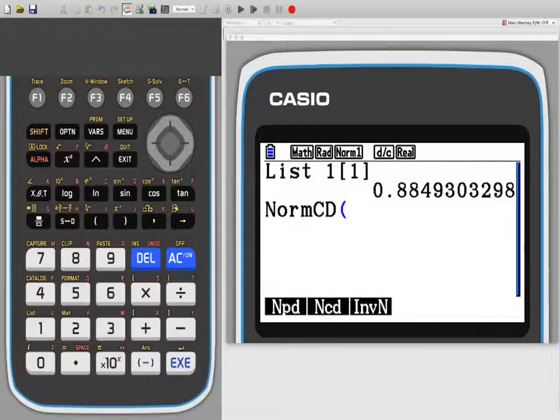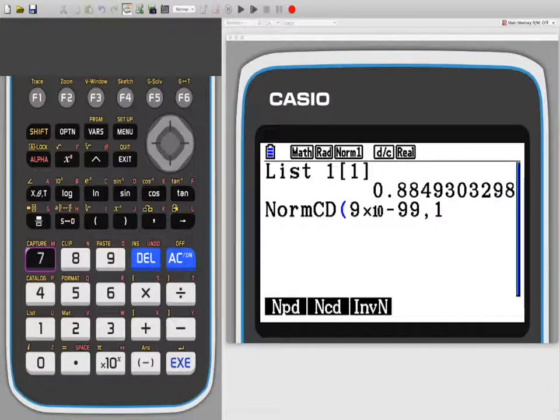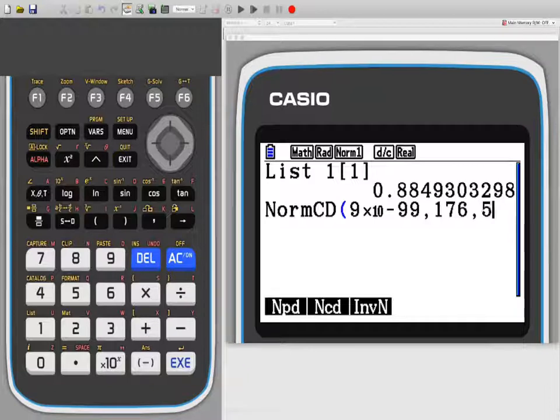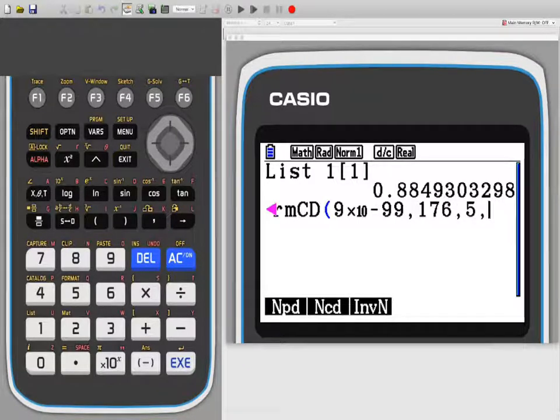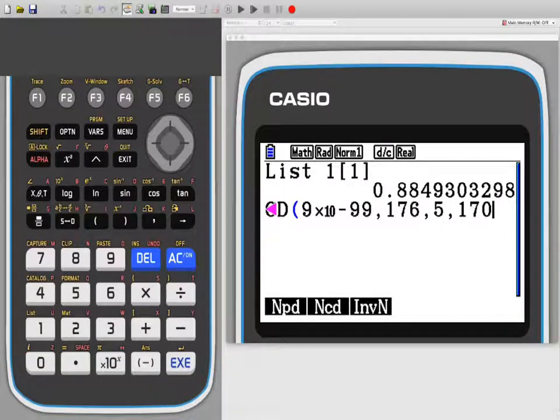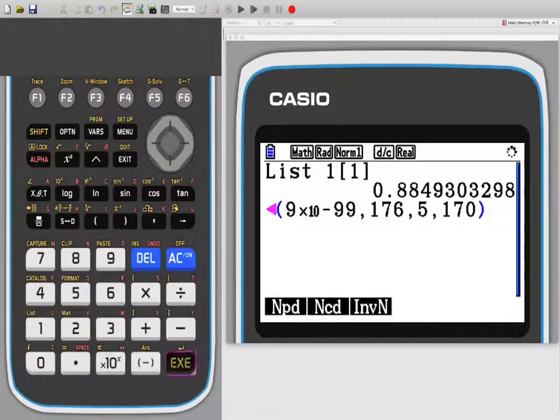I have to put the values in. I have to put the low value in first. So it's 9 times 10 to the minus 99. Comma. Now you have to put a comma in between each one. 176. Comma. The next thing you need to remember is the standard deviation you have to put in next, and then the mean. You have to put it in that order. Make sure you understand the order. And then close the bracket. Press enter. See if we get the same value.